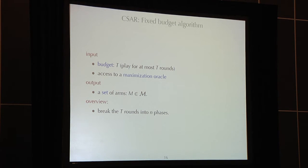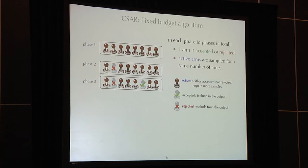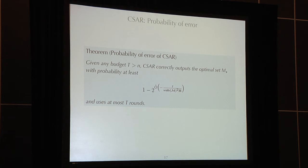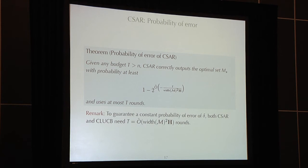Due to time, I think I'll just skip this CSR algorithm. This is a fixed budget algorithm. It also, based on the analysis, will be based on the exchange class and its width. The result will show that if you're given budget T, then the probability of success is at least one minus this value. Both fixed budget and fixed confidence results, algorithm results, show that if you want to guarantee probability of error of delta, then you need T at about width M squared to multiply H, that number of rounds.